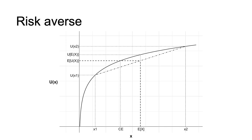Finally, the horizontal dashed line identifying the expected utility of X allows us to identify the certainty equivalent of the gamble. At the point on the X-axis marked CE, the utility from the certainty equivalent is equal to the expected utility of the prospect with expected value EX. As the certainty equivalent is less than the expected value, this provides another way of saying that the person is risk-averse.